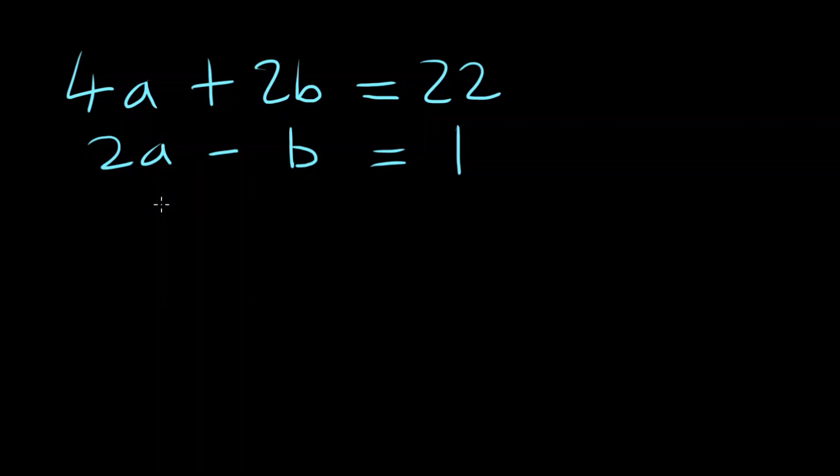Right, first of all, what's a simultaneous equation? Well, that's simply where we have two equations, in this case 4a plus 2b equals 22, and 2a minus b equals 1, and we have two unknowns. So we'll only be using two unknowns to begin with, you can solve for three unknowns and four unknowns if you have enough equations.